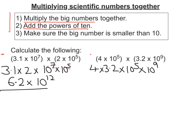And then we multiply the big numbers together. So 4 times 3.2 here is going to be 12.8. And then add the powers together. So 5 add 9 is 14.